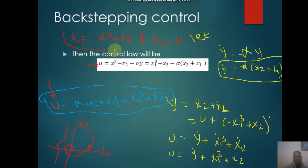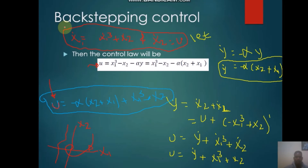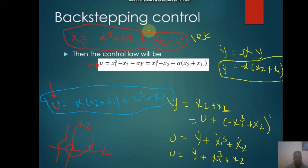This is all about the second example in backstepping control. I hope you got something useful from this example. I recommend working through additional examples from Slotine or Hassan Khalil's nonlinear control textbook if you are a control engineering student. In the next class we will look at Sliding Mode Control (SMC), which is a major research area in the 21st century. Thank you for watching — please subscribe, like, and share.